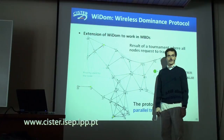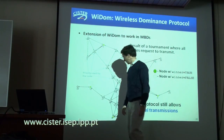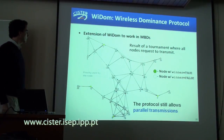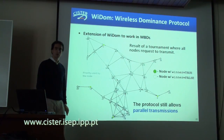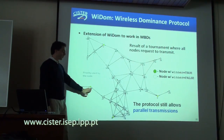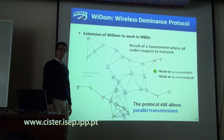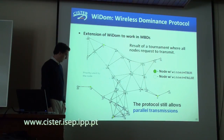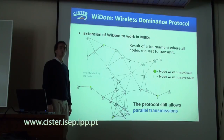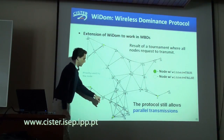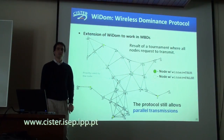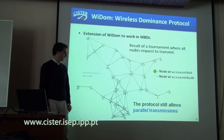Suppose node 12 had a higher priority than node 8 — they both express interest. Node 12 would win because node 8 is in its two-hop neighborhood, so node 12 would say node 8 cannot transmit. But wait — couldn't node 8 transmit because its transmission does not interfere with node 12's? No, these two cannot transmit at the same time because it would collide at node 27. It's a wireless thing.